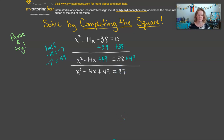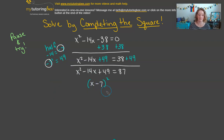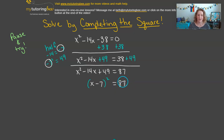Now step two — factoring. We know this is a perfect square, so we set up the squared binomial. It's going to be x plus or minus something, and that something is the magic number we found: negative 7. So we have x minus 7 squared equals 87. So far this looks just like the problems we've done before. In the solving step, however, it's going to look a little different because 87 is not a perfect square.